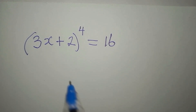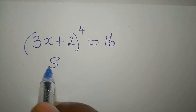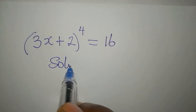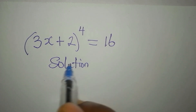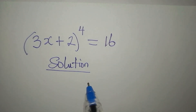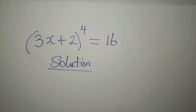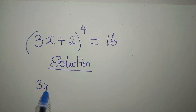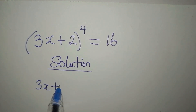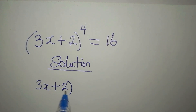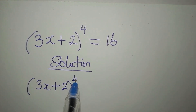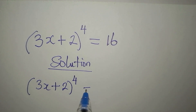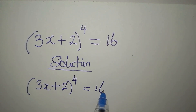Hello everyone. Let's provide the solution to this problem: (3x + 2) to the power of 4 equals 16.